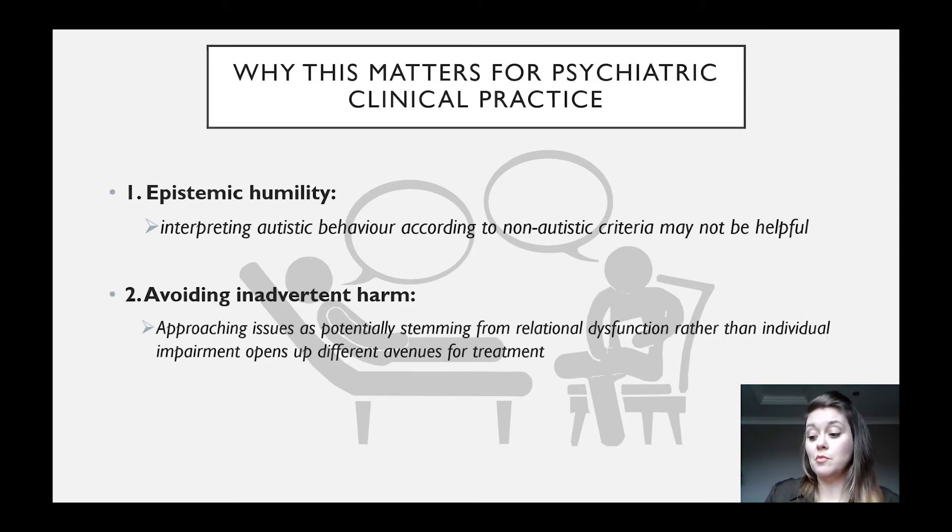Secondly, the double empathy problem is a potentially useful concept for enriching understanding of the problems of the patient. For example, if there's a couple and one member is autistic and the other non-autistic, from a double empathy problem framing, issues might be stemming from relational dysfunction between two profoundly differently disposed social actors, rather than a problem arising from an autistic impairment. In which case, focusing on treating or trying to change the autistic person could be more harmful than helpful. This knowledge might inform what kind of treatment is required. Perhaps systems therapy is more relevant than individual therapy.